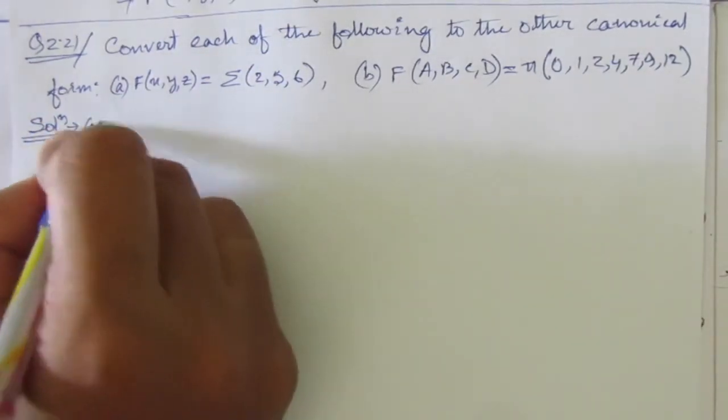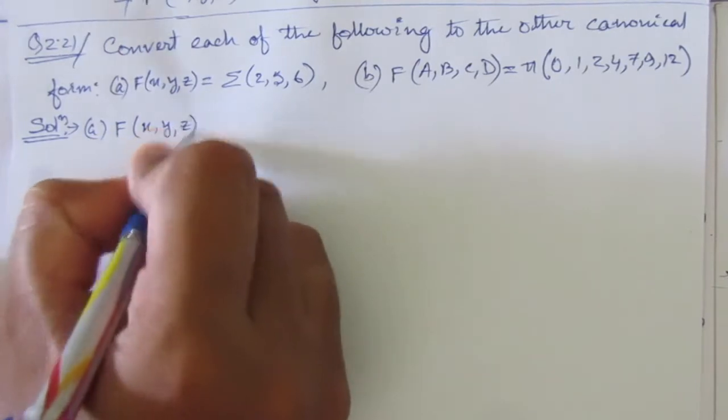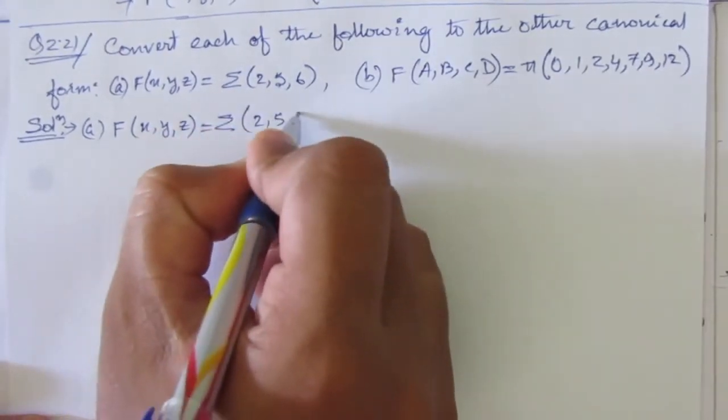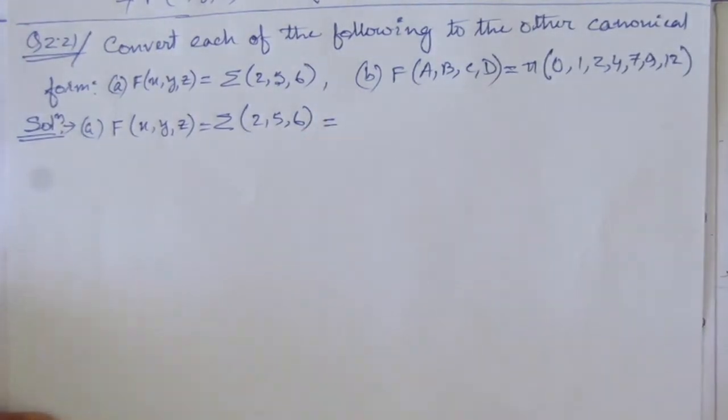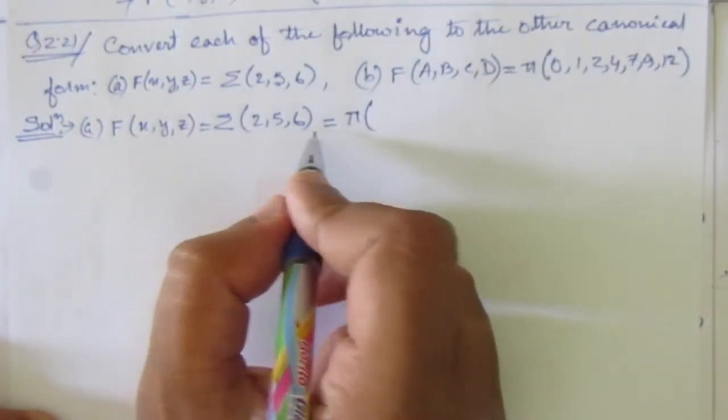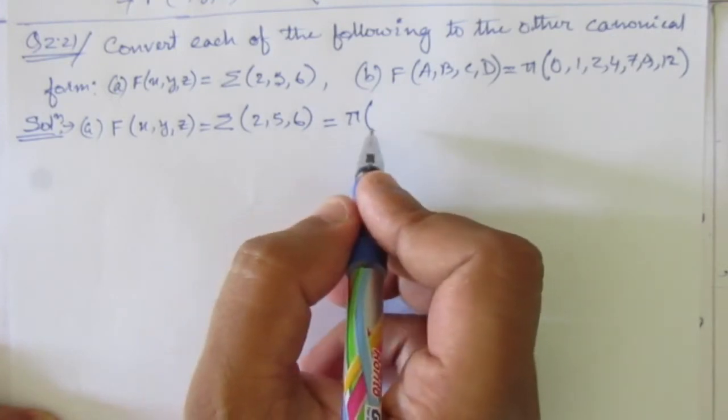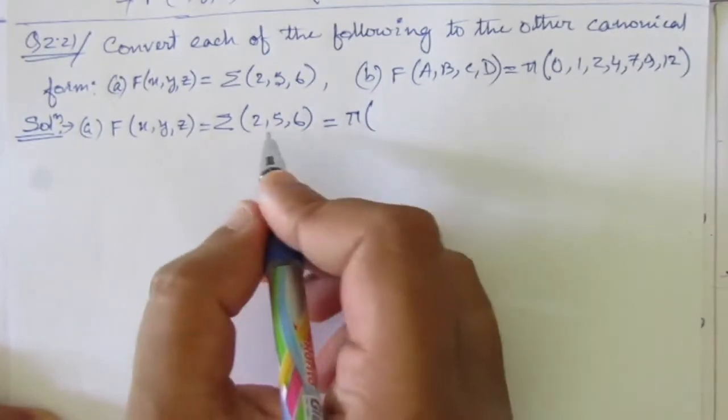The first problem is f(x, y, z) = Σ(2, 5, 6). If we convert it to product of maxterm form, it will have the terms that are not present here. So if we convert the sum of minterm form into its product of maxterm equivalent, it will contain the terms that are not present here.